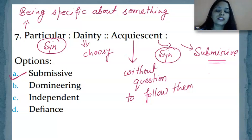And the rest of the options you can see are what? Antonyms. Dominating, being independent, defying something. If someone said you should do this thing and you refused, that is called what? Defiance. So these three words are what? Antonyms.